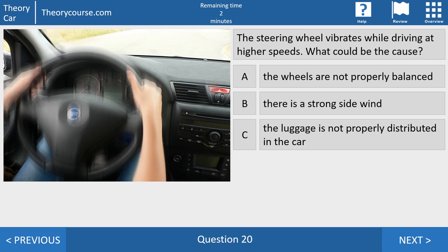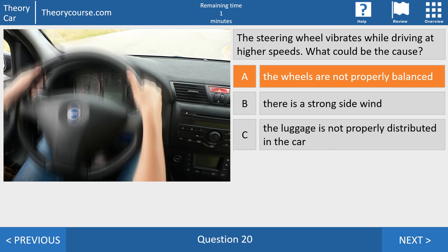Last question for this video. The steering wheel vibrates while driving at higher speeds. What could be the case? Answer A. The wheels are not properly balanced. Answer B. There is a strong side wind. Or answer C. The luggage is not properly distributed in the car. The only normal reasonable answer is answer A. If the steering wheel vibrates, if you drive around 100 kilometers, then the wheels are not properly balanced. So we have to go to the garage. Let your wheels balance. And everything is okay.